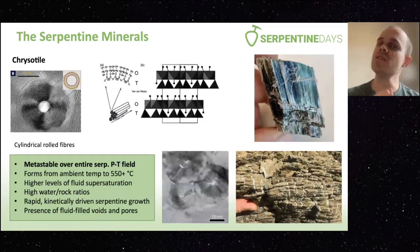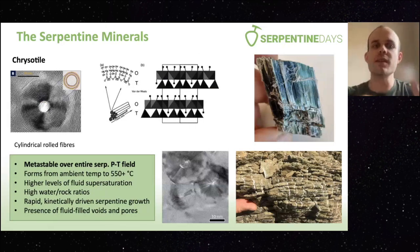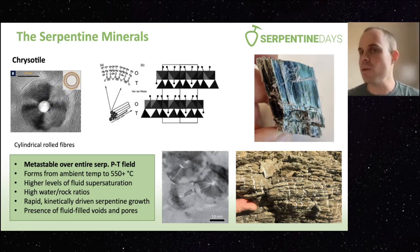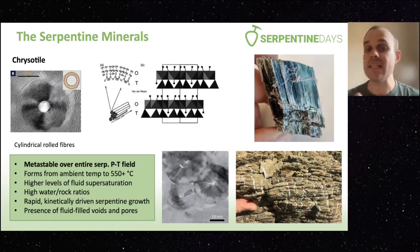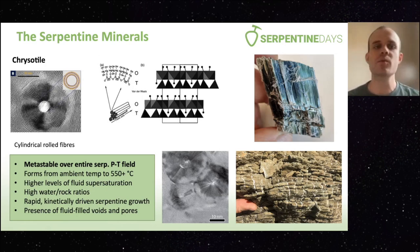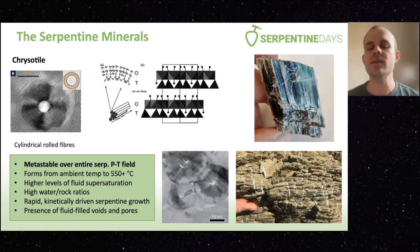The same, however, cannot necessarily be said of the other minerals. Chrysotile has a rolled cylindrical fiber crystal form, and one key thing is that it's metastable everywhere across the serpentinite P-T field. So it forms from possibly sub-ambient conditions all the way up to the upper stability limit. It's not P-T space that's really controlling its formation, but instead local conditions: it forms when there's high levels of fluid supersaturation, high water-rock ratios. It's favored when we get rapid, kinetically driven growth, and we often find it where there was likely fluid-filled voids and pores.